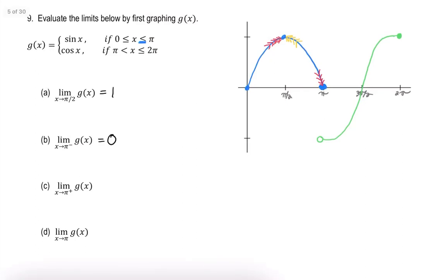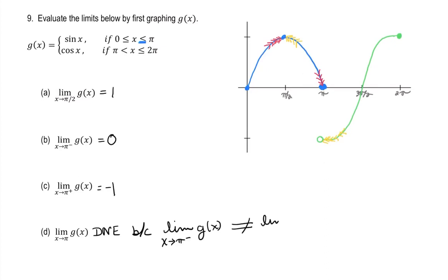The limit as x approaches π from the right: as I travel along the function getting closer and closer to π from the right, those y values are approaching negative 1. The overall limit at π does not exist because the limit as x approaches π from the left is not equal to the limit from the right. If the one-sided limits are not equal, the overall limit does not exist.